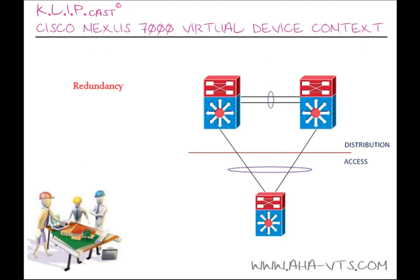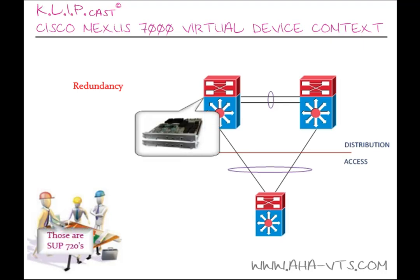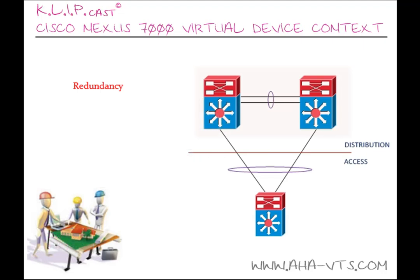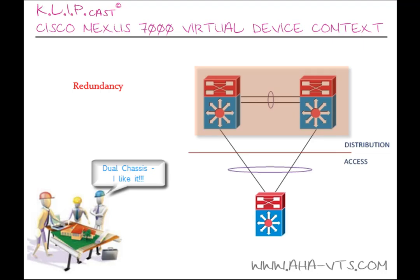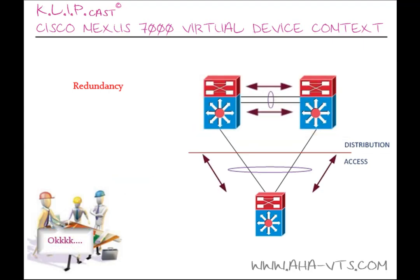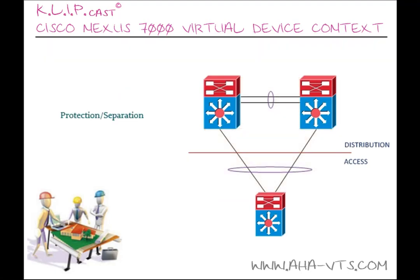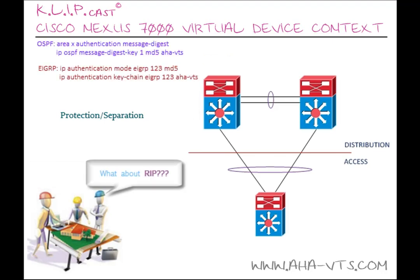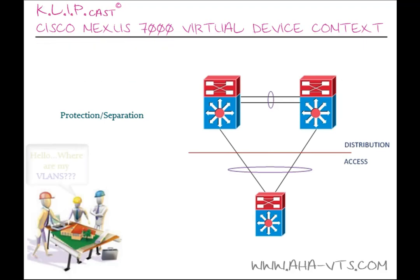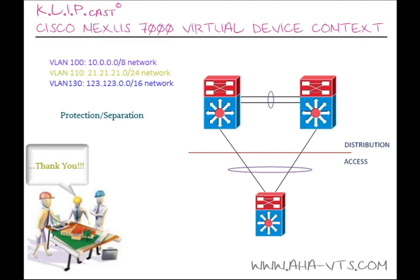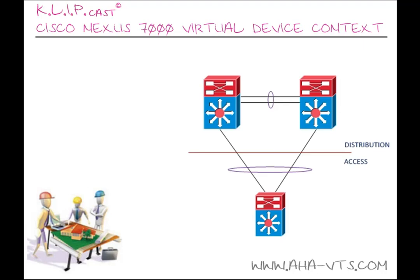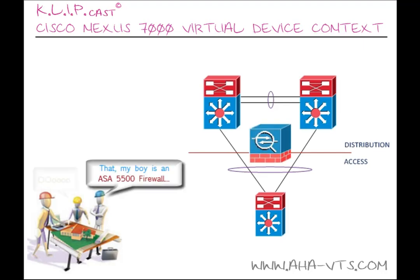Redundancy can be accomplished by, but not limited to, the usage of dual supervisors in the case of Catalyst 6500 chassis for unexpected supervisor failure, redundant chassis for unexpected chassis failure, multiple paths for routing decisions, and VSS pairing for the usage of multi-chassis EtherChannels. On the protection side, VRFs can be used for distinguished routing tables, MD5 hashing can be used for routing neighbor relationships, and VLANs can be used for layer 2 isolation. Between each layer in your data center architecture, you may have a firewall or two needed to filter out traffic between zones and/or other networks.